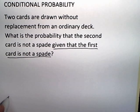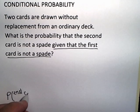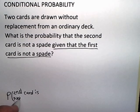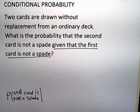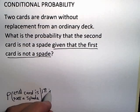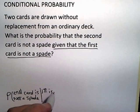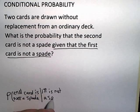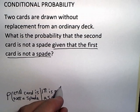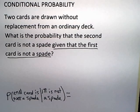Let's go ahead and form that probability statement. We want to know the probability that the second card is not a spade given that the first card is also not a spade. So there's our probability statement.